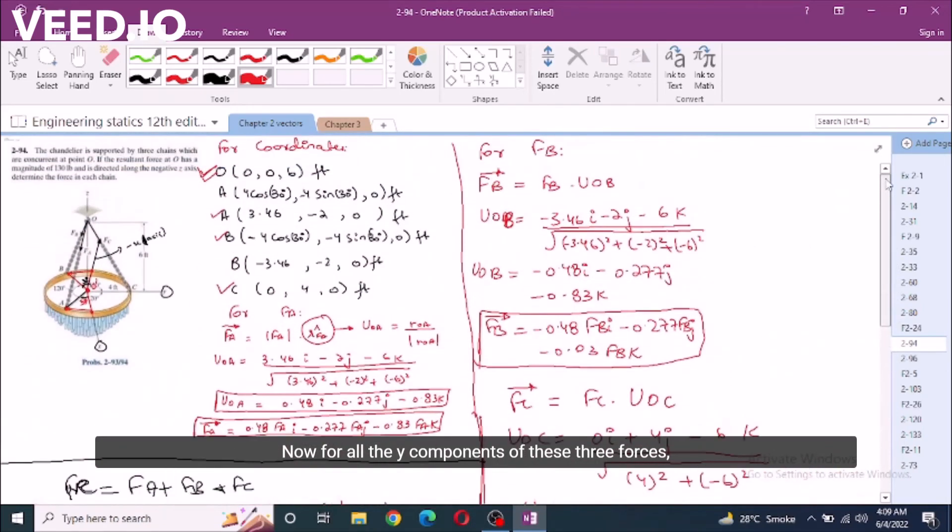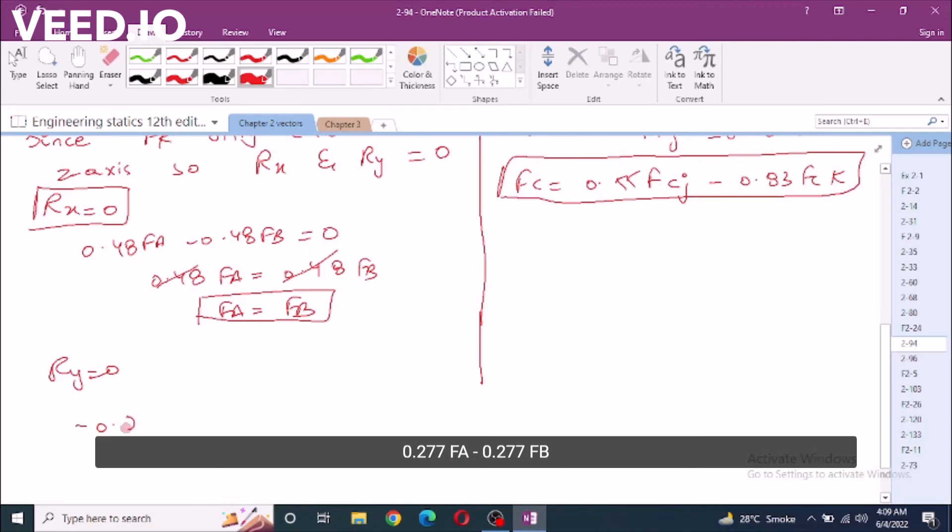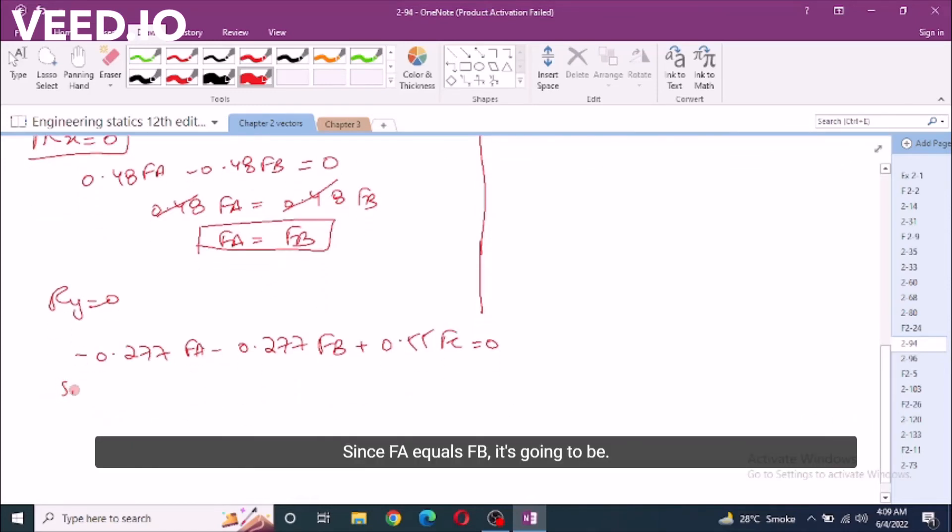Similarly I can also write RY equals 0. Now all the y components of these three forces: we have -0.277FA j, same right here, -0.277FA - 0.277FB and positive 0.55FC equals 0. From here FB equals FC.